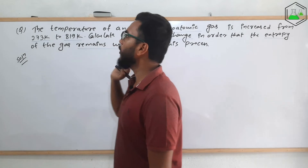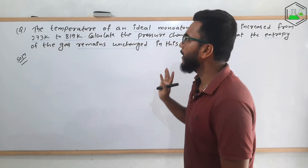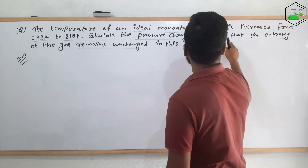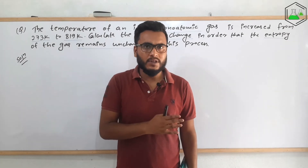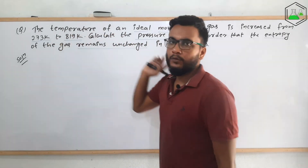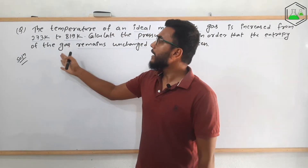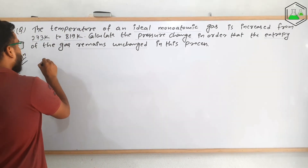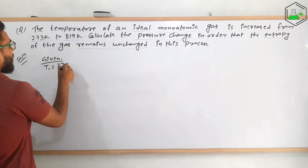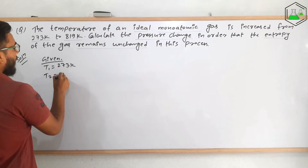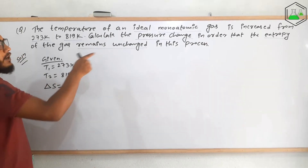Now let us see another numerical problem. The temperature of an ideal monoatomic gas is increased from 273 Kelvin to 819 Kelvin. Calculate the pressure change in order that the entropy of the gas remains unchanged in this process. Given: T1 = 273 K, T2 = 819 K, and ΔS = 0, because the entropy is not changing.